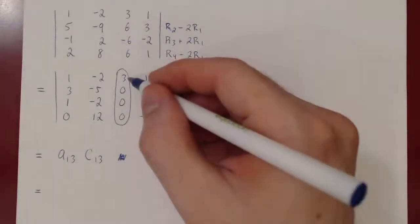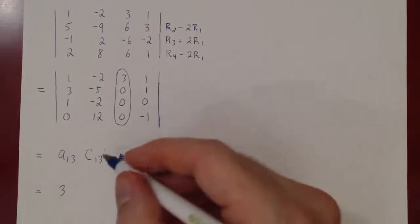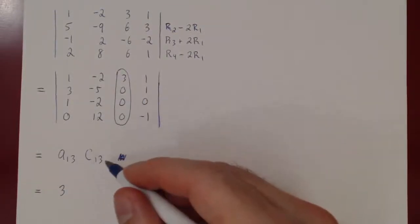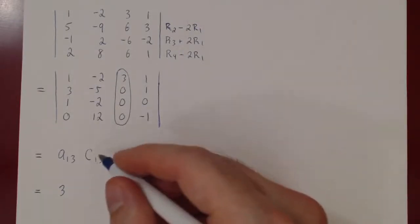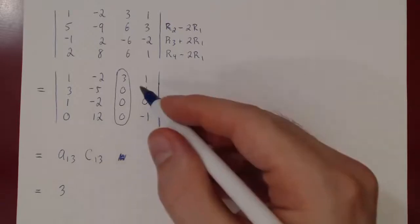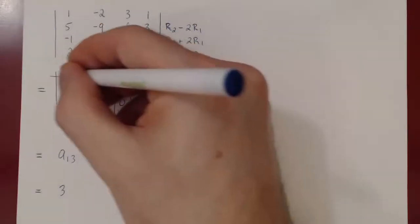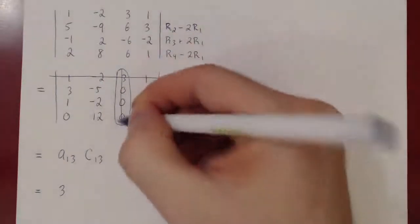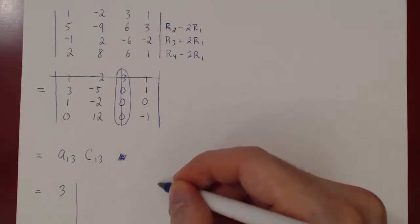What is a₁₃? It's just 3. The cofactor has two parts: negative 1 to the 1 plus 3, which is negative 1 to the 4th, giving positive 1. And C₁₃ is the determinant of the matrix obtained from the previous matrix after deleting the first row and third column — now a 3x3 determinant.